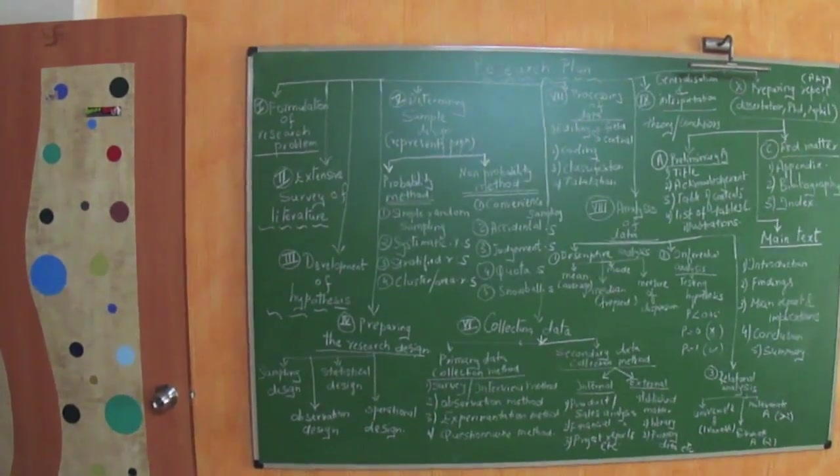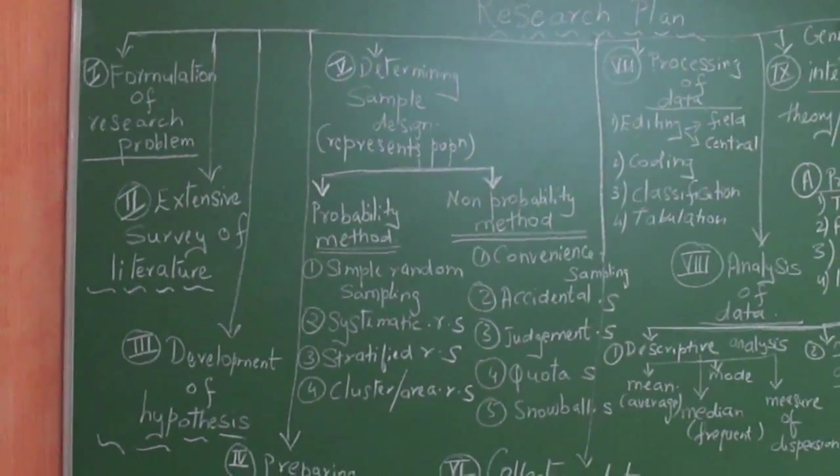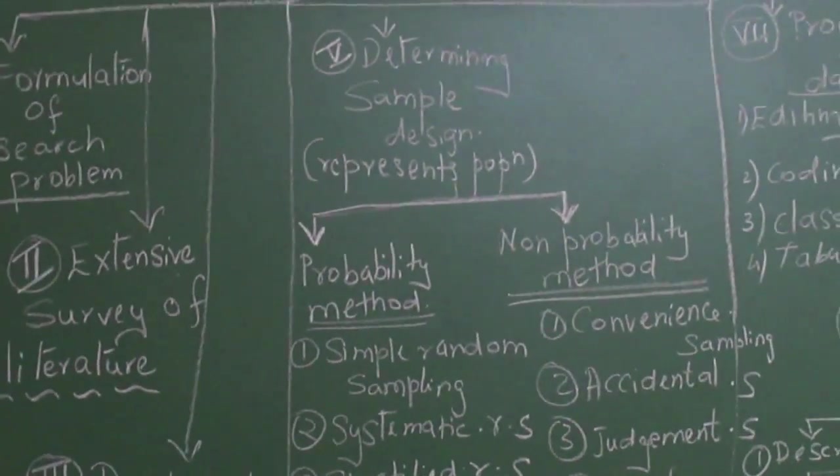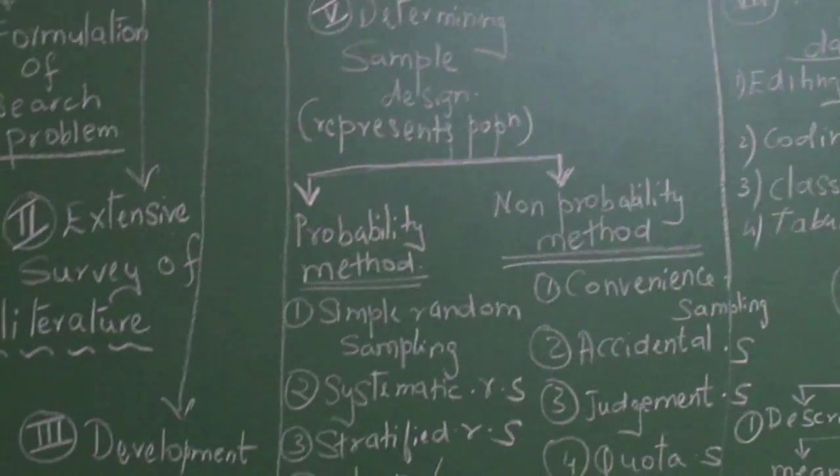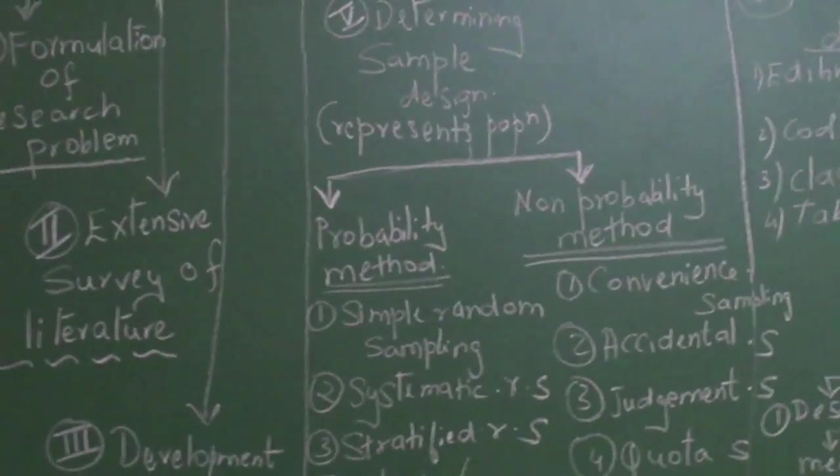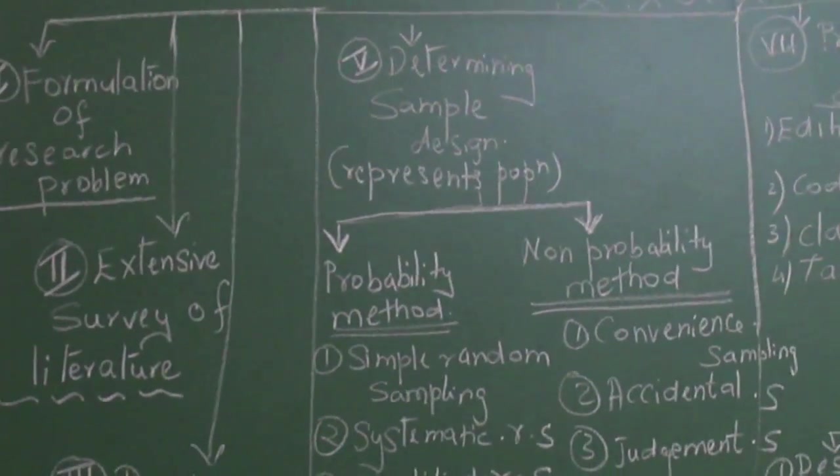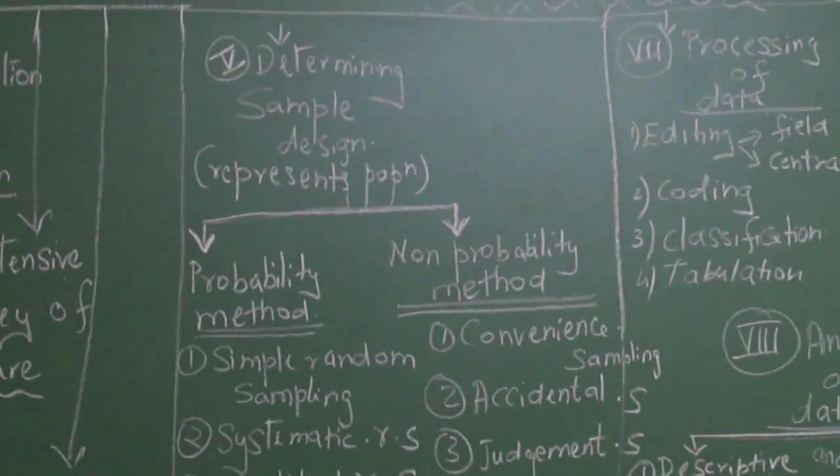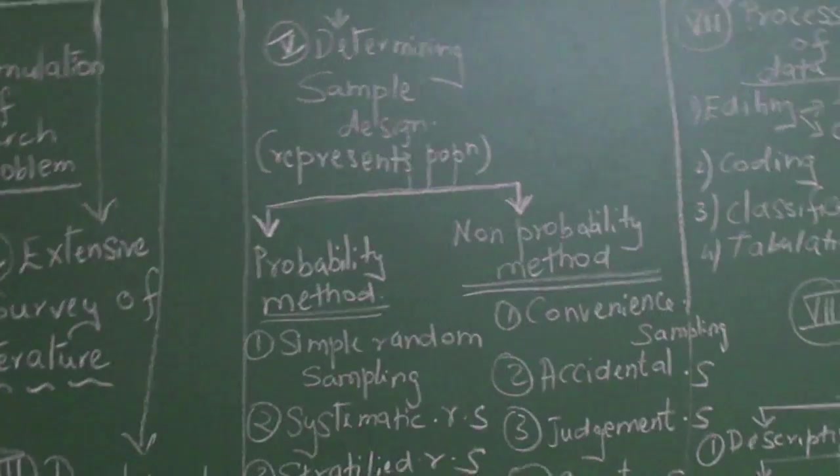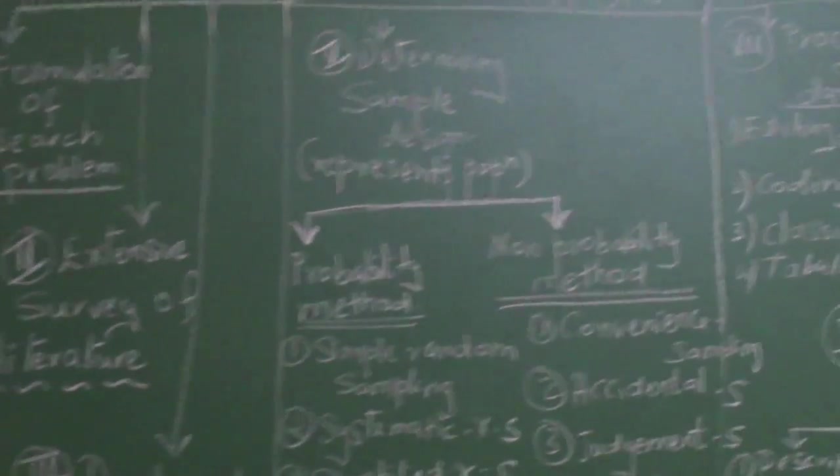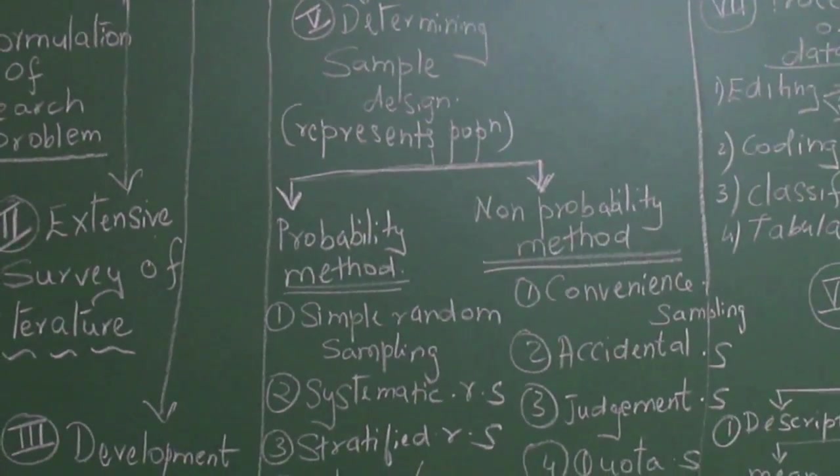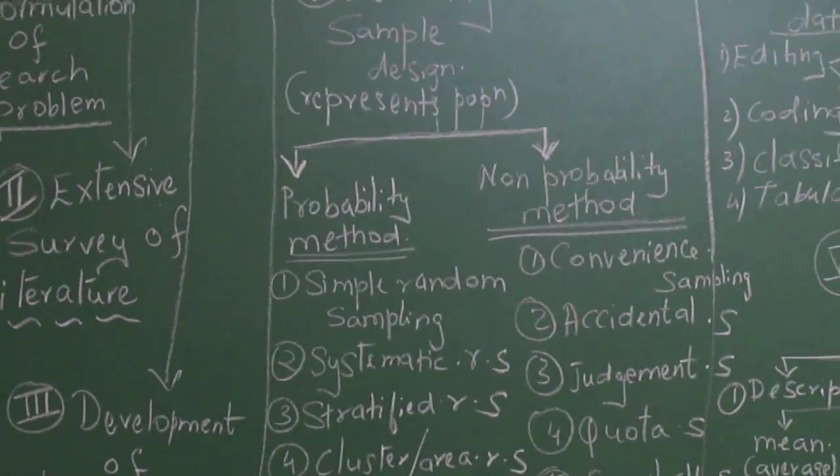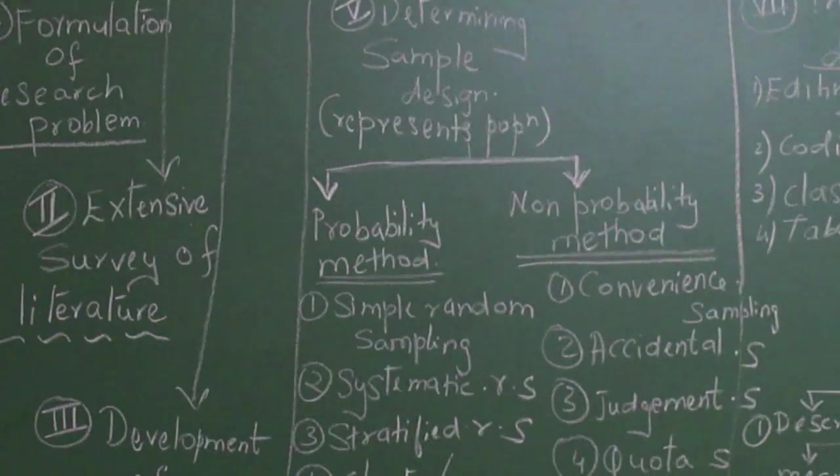Now let's zoom in to the fifth point. The fifth point is determining the sample design. Now what do you mean by sample? If you are cooking a dish before you give it to somebody, you will taste. So that's a sample of the whole dish. You cannot take the population that is in crores, you can take a sample of that population.